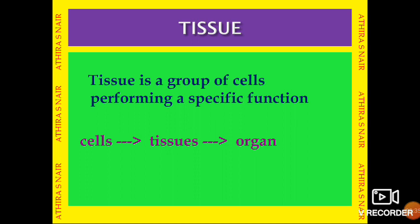Tissue is a group of cells performing a specific function. The cell is the basic structural and functional unit of an organism. A group of cells performing a specific function is called tissue, and tissues joined together form one organ.